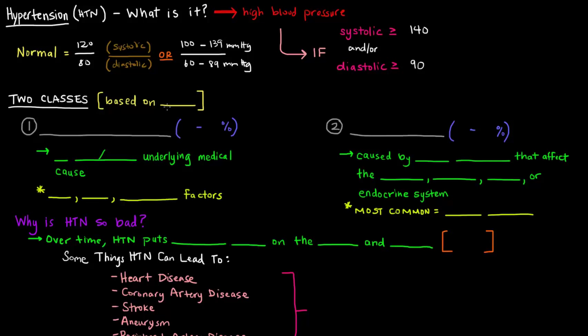There are two classes of hypertension, and they're based on the cause. The first one is primary, or essential, hypertension. And the second one is secondary.